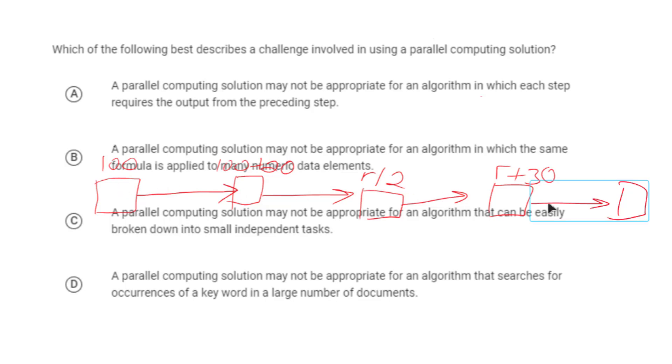Basically every step of these is non-independent. It can't really be broken down on its own because it requires that we first solve the previous steps. That's why this one is sequential. There's no way to make each of these steps independent because they can only be done as long as they have the answer to the previous step. So this is one example of a task that cannot be parallelized. In short, a parallel computing solution may not be appropriate for an algorithm in which each step requires the output from the preceding step.